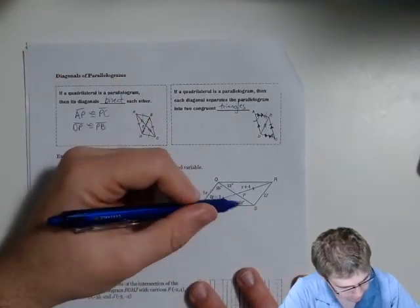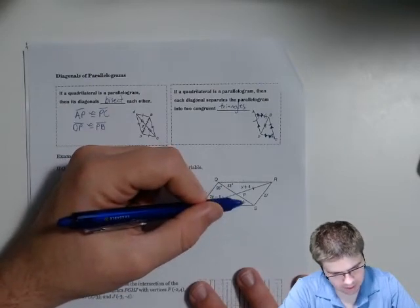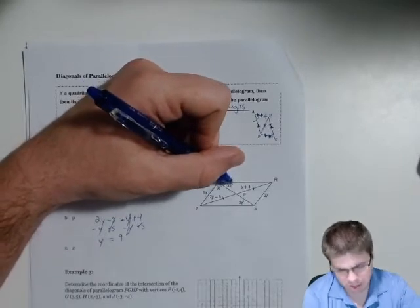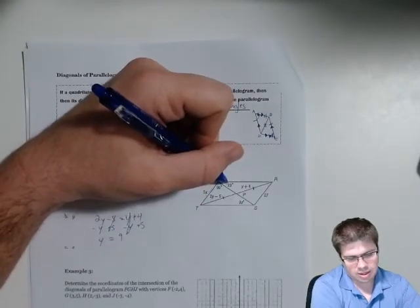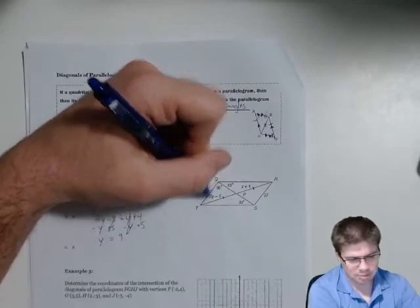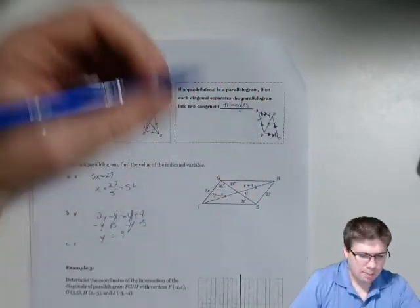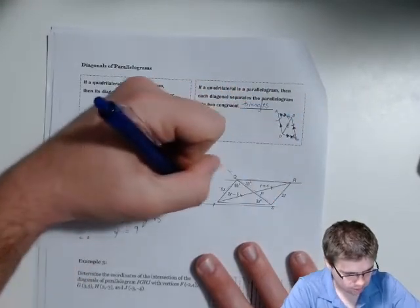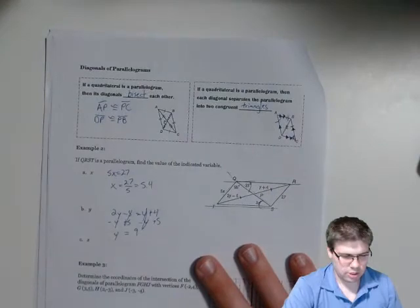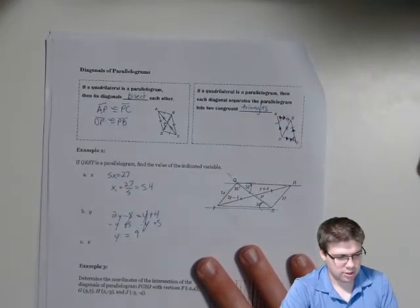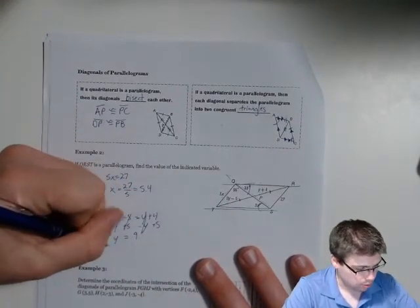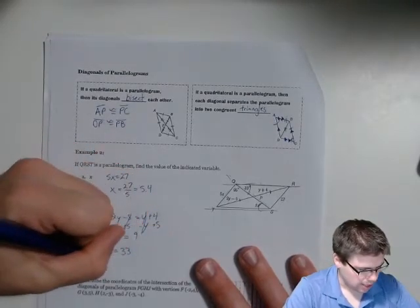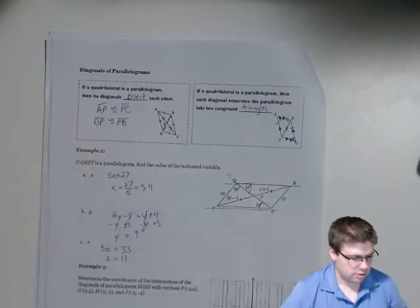For z, I've got 3z down in one angle. We've got parallel lines cut by a transversal, so those two angles are just alternate interior angles and will be congruent to each other. So 3z equals 33, divide, and z equals 11.